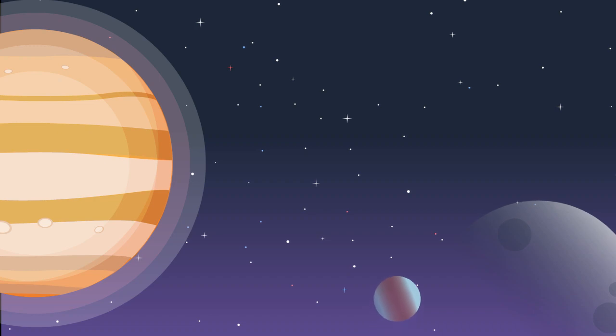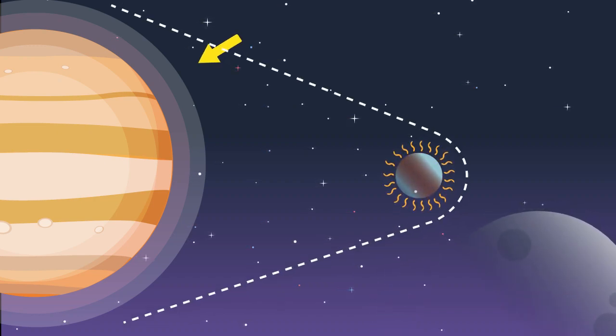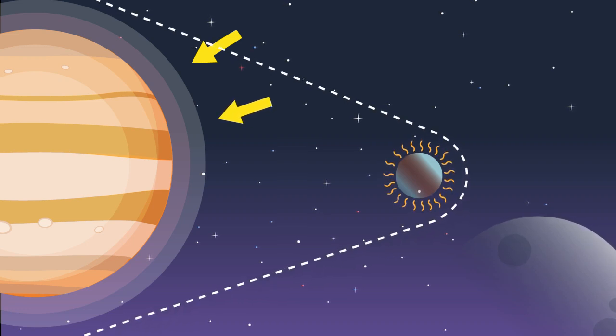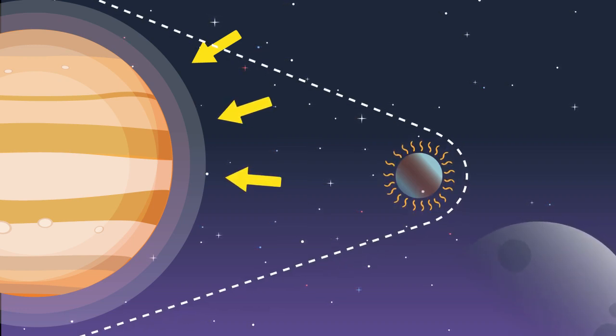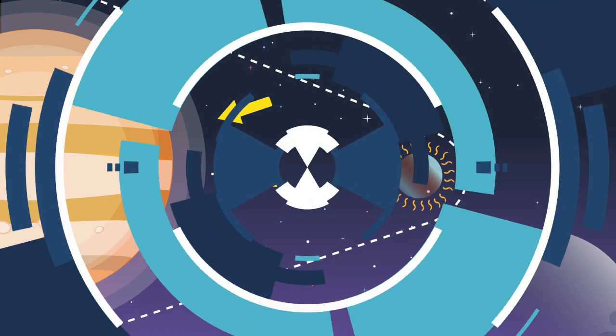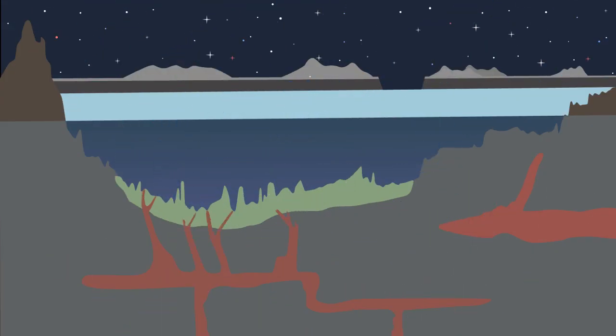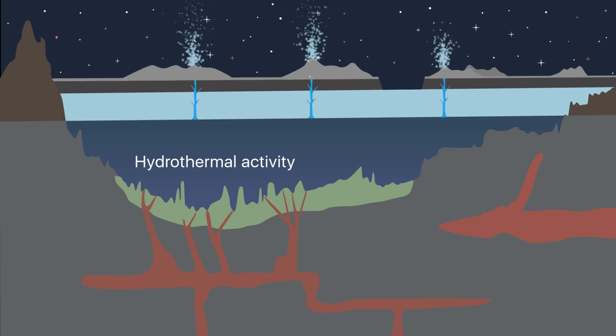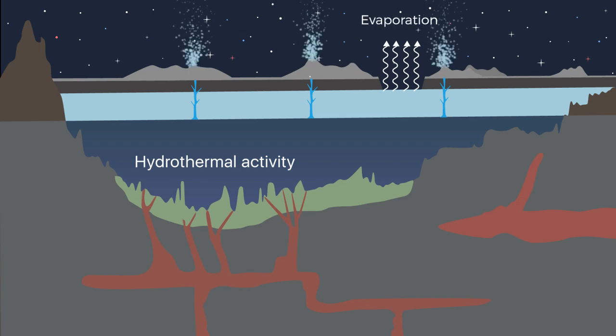Jupiter's immense gravity creates tidal forces that continually ebb and flow. Inside Europa's rocky interior, this results in greater geological activity, and with it, the generation of heat. Scientists believe this geothermal activity may drive volcanic vents on the seafloor, raising the chances of Europa's habitability, since vent systems on our own world support a wide variety of life.